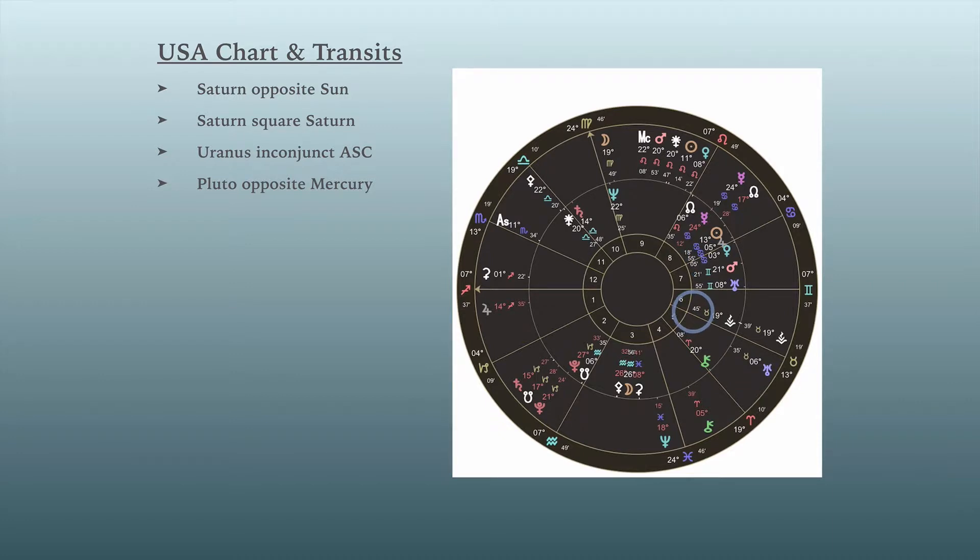So let's just, this is sort of a review if you've been with me, because we're going to look at the transits, which are the outer ring, that are affecting the U.S. right now. And what's occurring, here's the transit of Saturn, transit of Pluto. They're generally speaking opposite these important elements in the U.S. chart. Here's the Sun, Mercury, Venus, Jupiter.